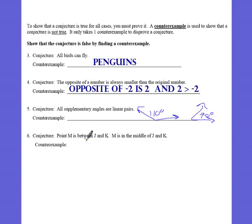And then the last one here, point M is between J and K. M is in the middle of J and K. So is that true? No. Because J and K is here, and just because M is in between, that doesn't mean we can say it's in the middle. M could be there. And that's a counterexample.